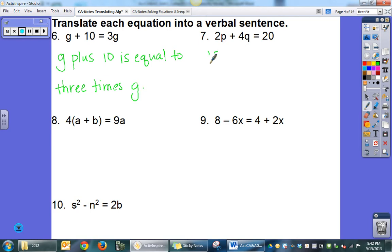I could say twice p plus 4 times q is 20. And I could say the sum of twice p and 4q as well. Again, there's more than one way to say these.